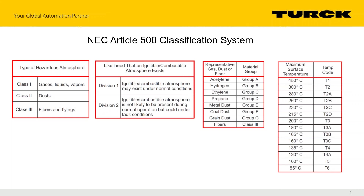The dust groups are Group E, F, and G. Group E is metallic/conductive dusts. Group F is characterized by coal dust and carbonaceous dust. Group G is grain dust. Class 3 doesn't have a group — fibers and flyings are a single category.